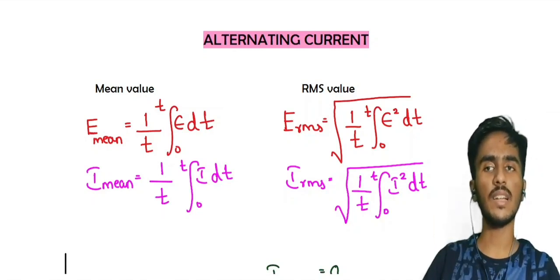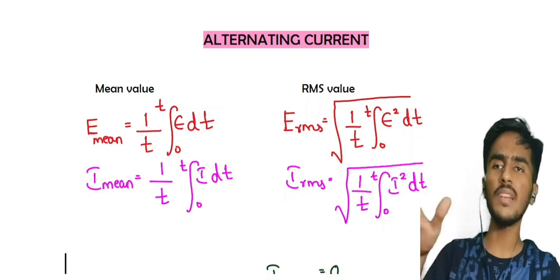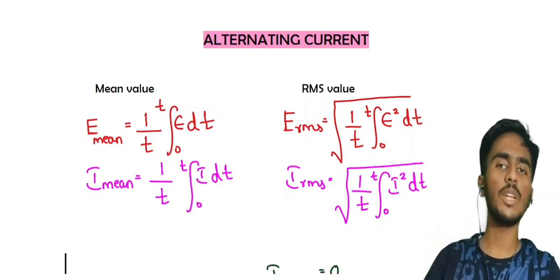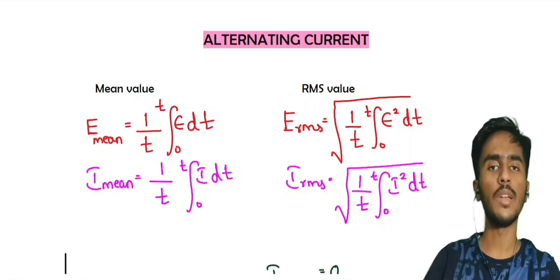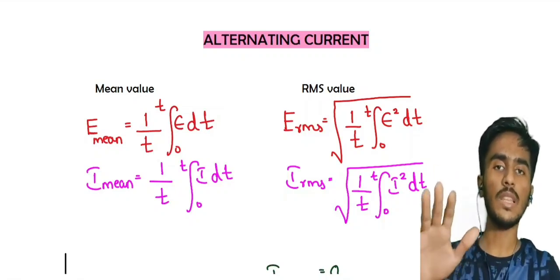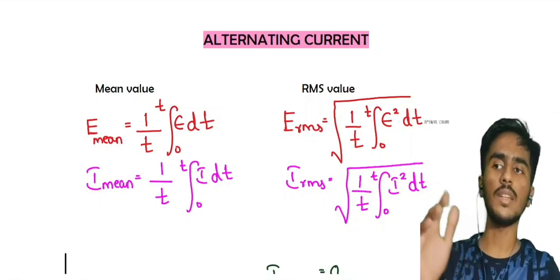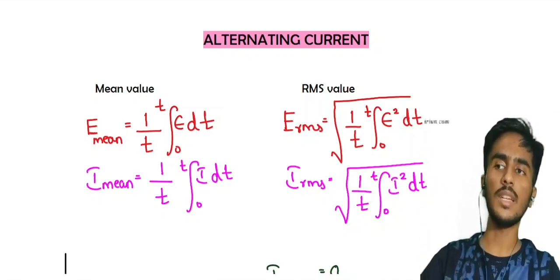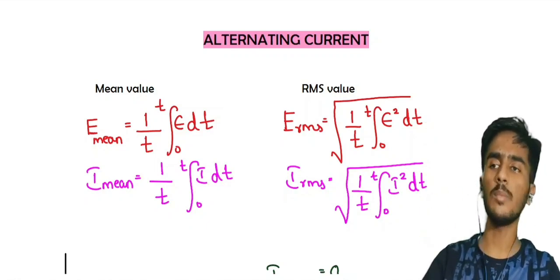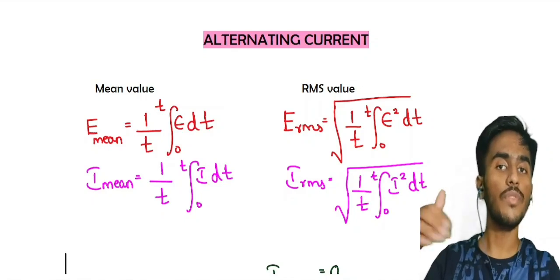Now, for alternating current, we have the first formula: the mean value and the RMS value. Mean value means average value, because the current is different in every part of the cycle. So we take the average. That formula is E mean and I mean — E mean is the average value of EMF, and I mean is the average value of current.